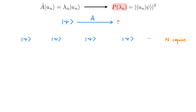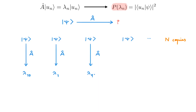When we measure A for each of these systems, we can in principle get any of the possible eigenvalues as an outcome. So for example, for the first system we may get λ10, for the second one λ1, for the third one λ99, for the fourth one we may get λ10 again, and so on.